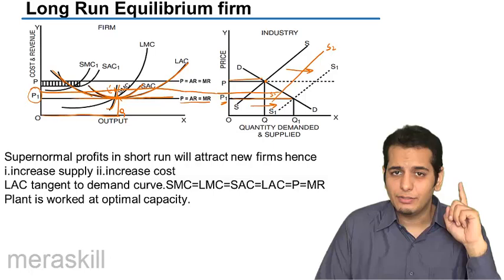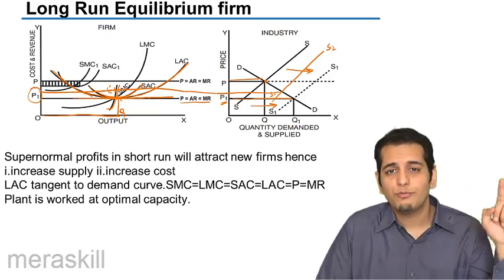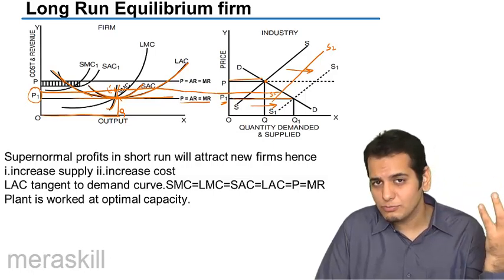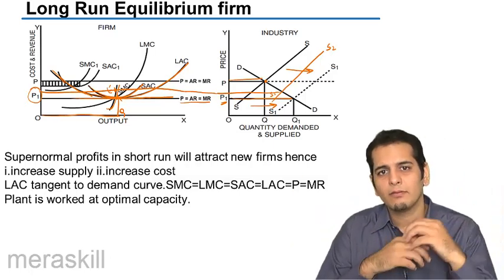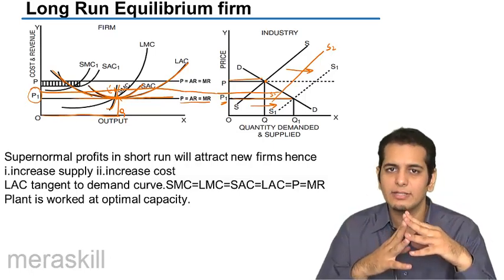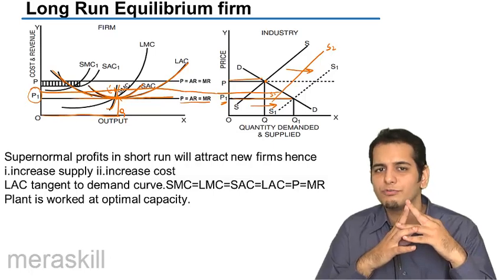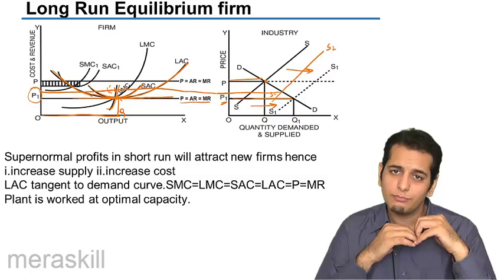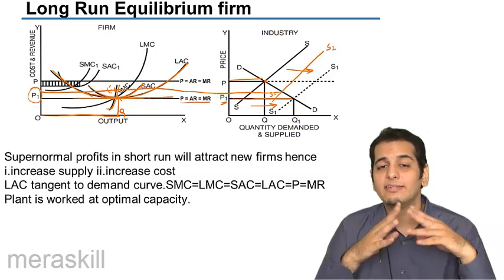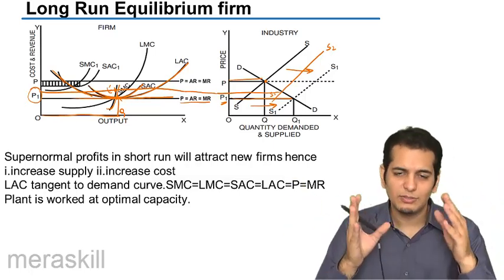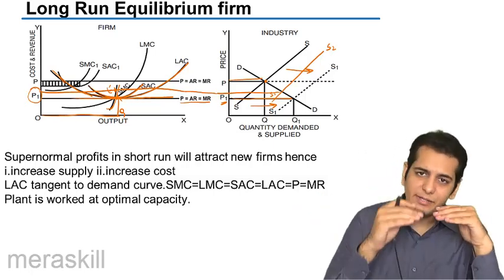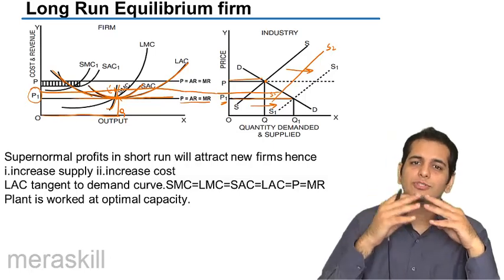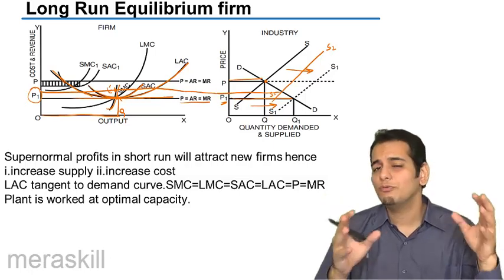Please remember this point: in the long run, under perfect competition, no firm can earn supernormal profits and no firm will incur losses. If firms are earning supernormal profits, it will attract other firms into the market. Supply will rise, leading to a drop in the selling price, and profits will be reduced from supernormal to normal. If firms are incurring losses, they will exit the market — fewer firms means less supply, which raises the price — and those firms that were incurring losses will come to a position of normal profits.